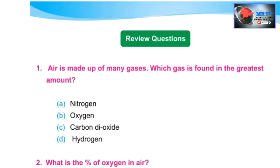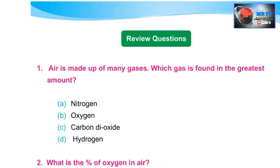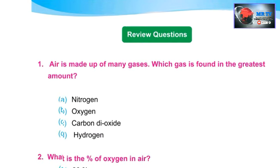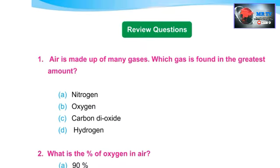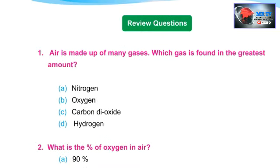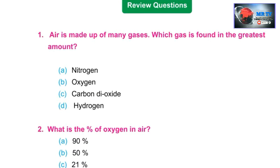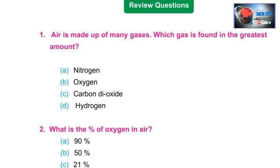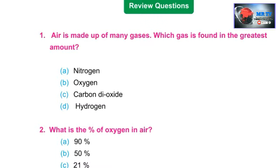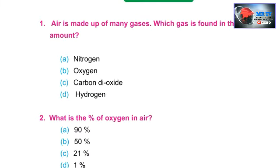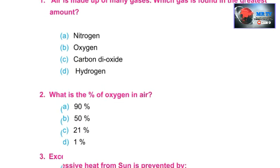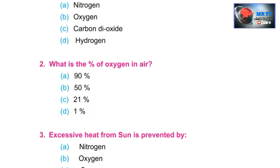Now some review questions. Air is made up of many gases — which gas is found in the greatest amount? Among all the gases in the air, nitrogen is found in the greatest quantity, followed by oxygen, then carbon dioxide, and hydrogen.